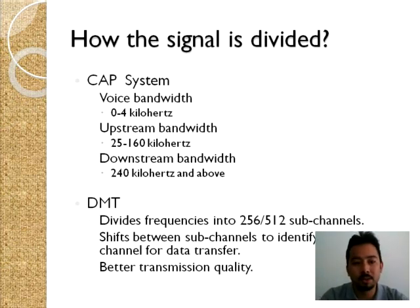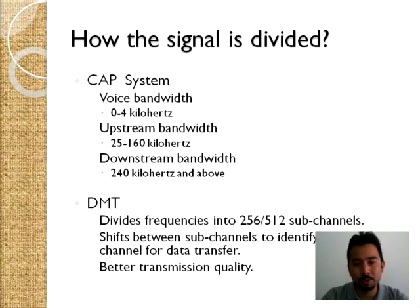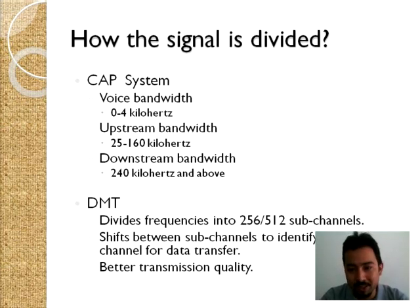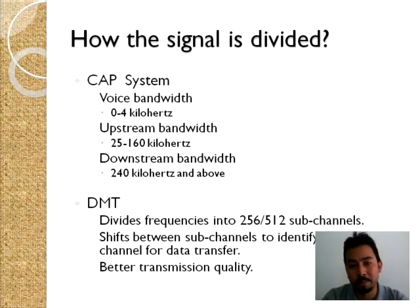There are two standards for DSL signal splitting, of which DMT is the widely adopted industry de facto standard. The CAP system divides the total signal into three main parts: the voice bandwidth from 0 to 4 kHz, the upstream bandwidth from 25 to 160 kHz, and the downstream bandwidth from 240 kHz and above depending on various factors. This separation achieved the goal of reducing RFI and other noise and interferences.